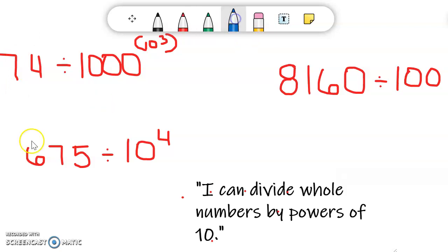So the way we solve this expression is we write the whole number, which in this case is 74. Then we put a decimal point at the end of the whole number.